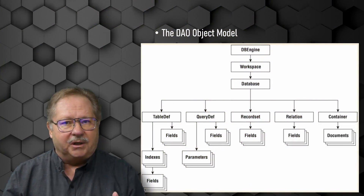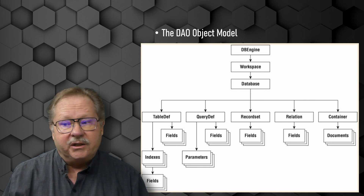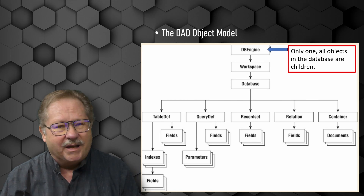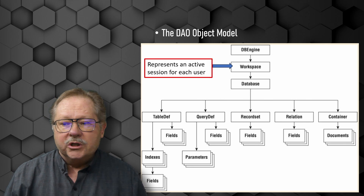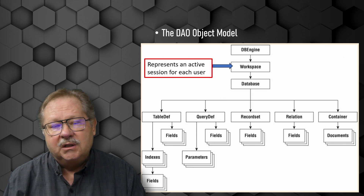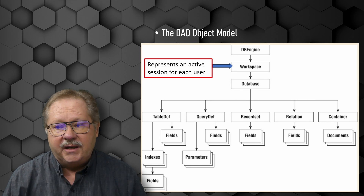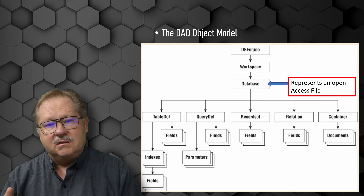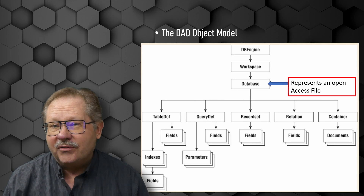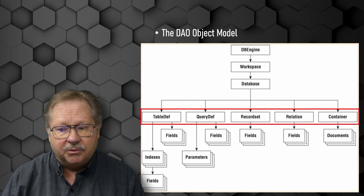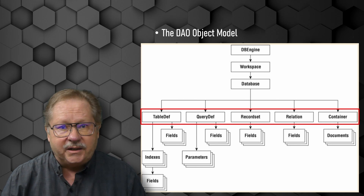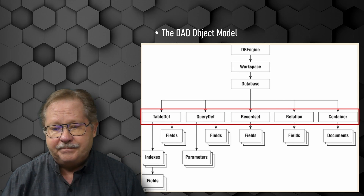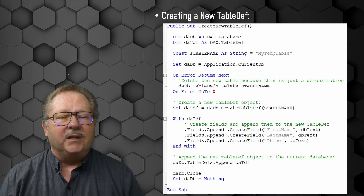This diagram will get us started with the idea of the object model. When you start Access, it starts the database engine — that's the underlying software that runs everything. The workspace is the active user session. Then there's the database, which represents the open Access file containing all the other tables, queries, record sets, relationships, and the container that holds all of those items.